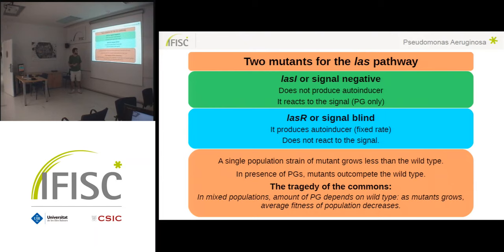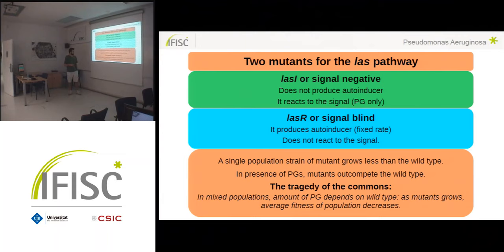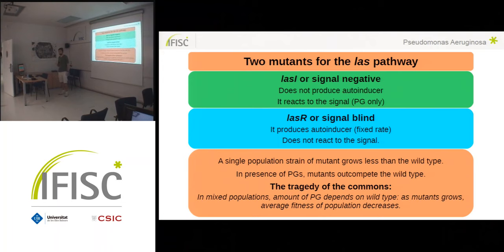This leads to what is called the tragedy of the commons, because as we increase the proportion of cheaters — these mutants — in the system, the amount of public good decreases because we have fewer wild type individuals producing it, and the fitness of the entire population decreases.